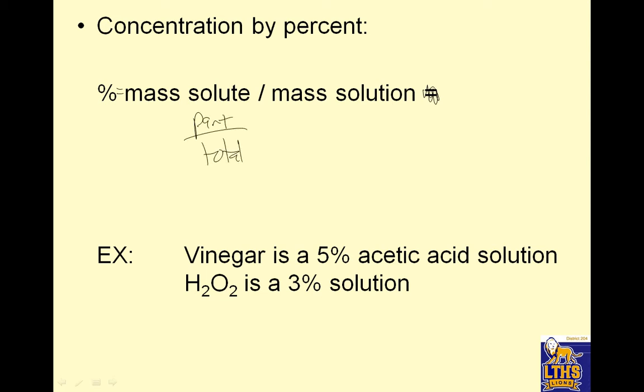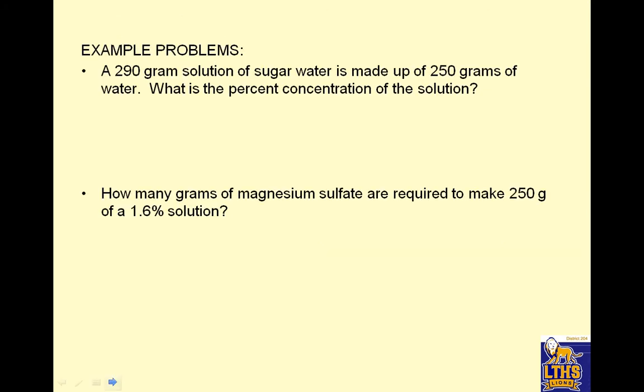This is mass solute over mass solution times 100%. We've seen that 90 bajillion times. Vinegar is 5% acetic acid solution, so it's 95% water. H2O2 is a 3% solution, 97% water. It doesn't have to be in water, but for us it almost always is.